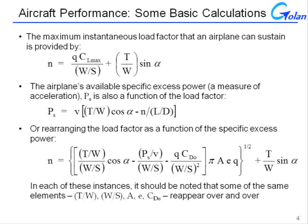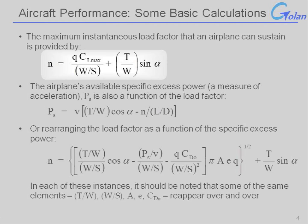What we're going to see is that some of the same basic aircraft parameters will appear over and over again when we make different performance calculations. What will differ will be the relative weight that each of these parameters has on a particular measure — for example, if we look at the maximum instantaneous load factor that an aircraft can achieve.